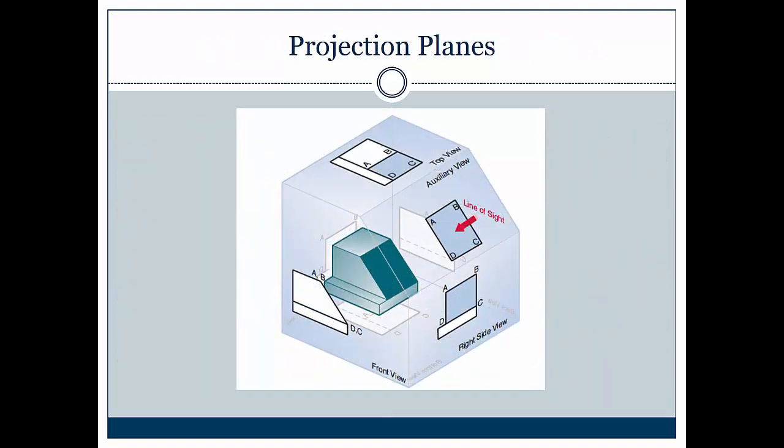A fold line represents the projection plane for the adjacent view. For example, this fold line right here can represent the right side view. A line appears true length if it lies in a plane parallel to the projection plane. So for example, line AB in my object is true length in my right side view.